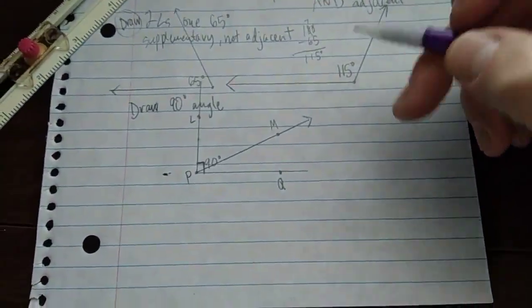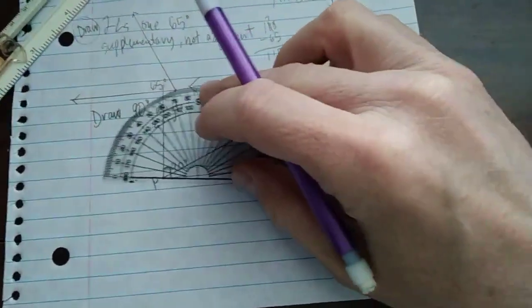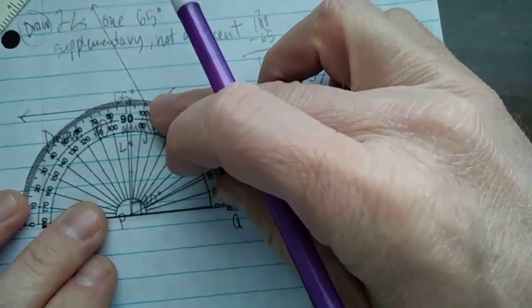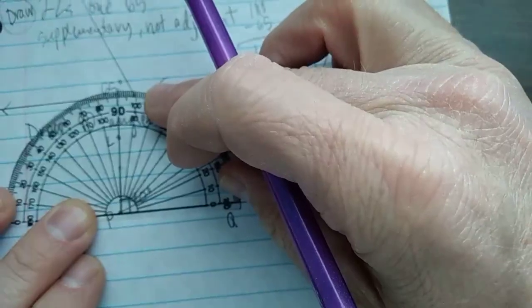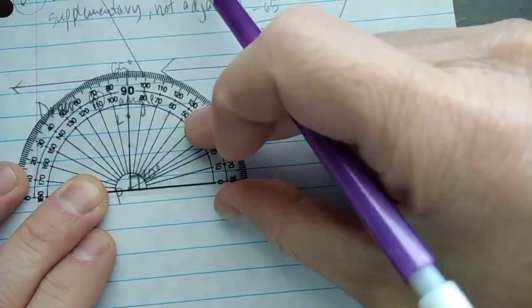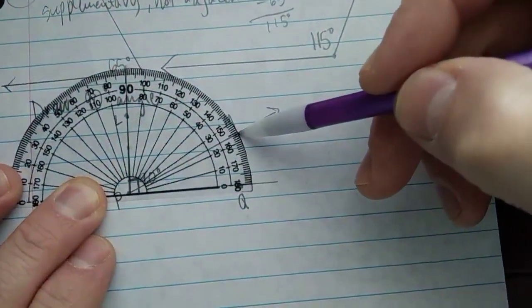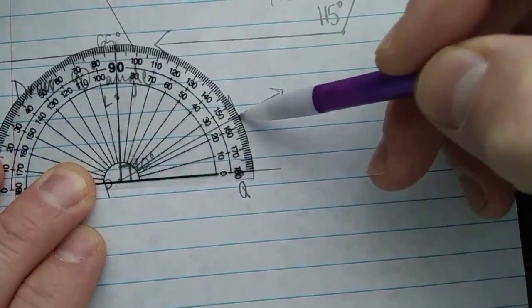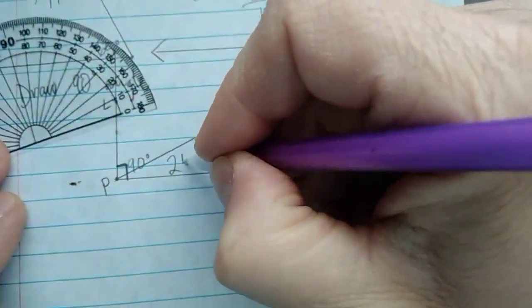And now I want to measure each one of these using my protractor again. So, my little one, the little one for me is on the bottom. And since this is 90 degrees, this line should line up with the 90, if I did it right. So, this line looks like it's going right through 10, 24. So, this is 24 degrees.